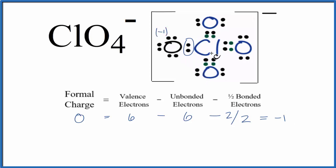Next, let's do the oxygen with the double bond. We still have 6 valence electrons since it's oxygen. We'll subtract unbonded valence electrons. We have 2, 4 of those.